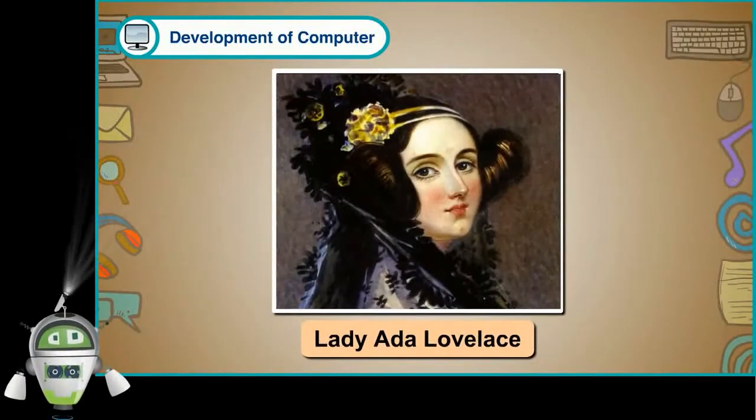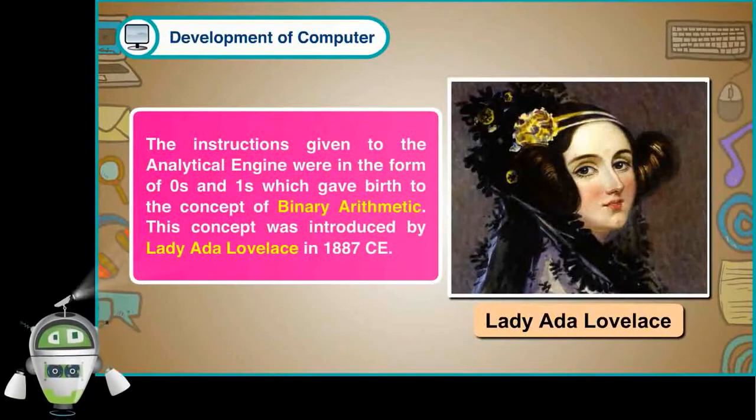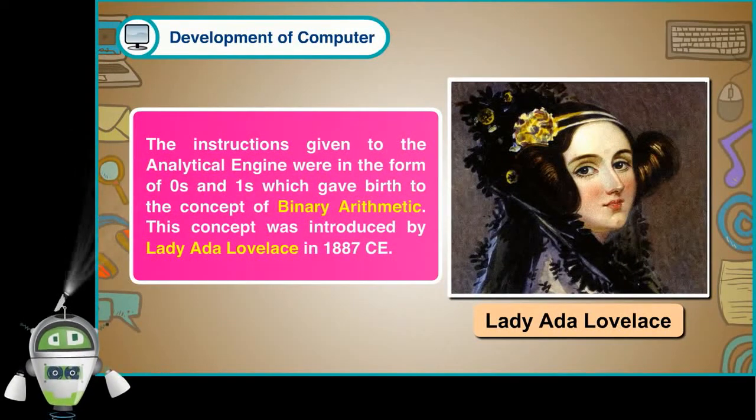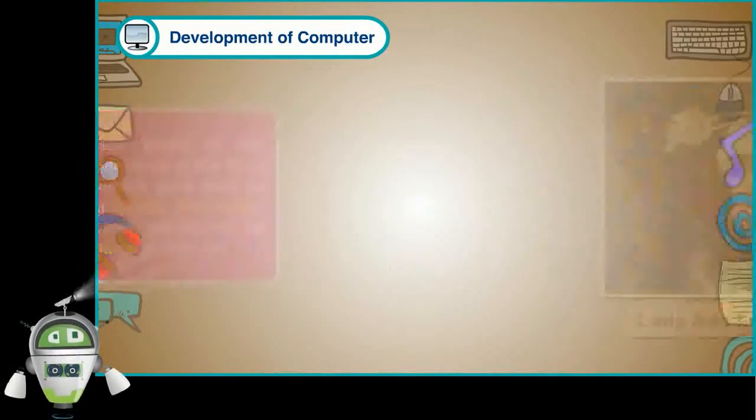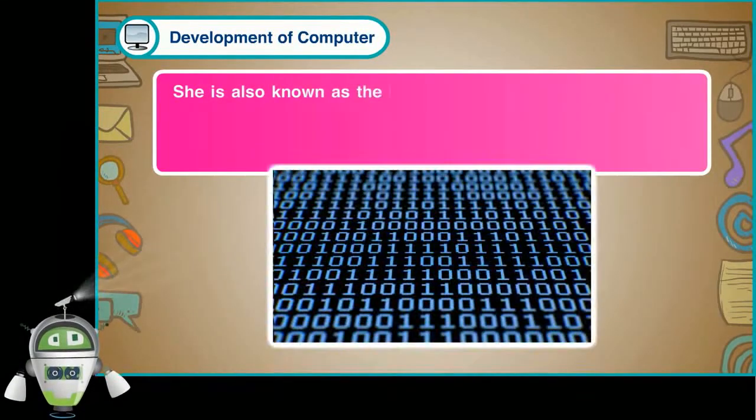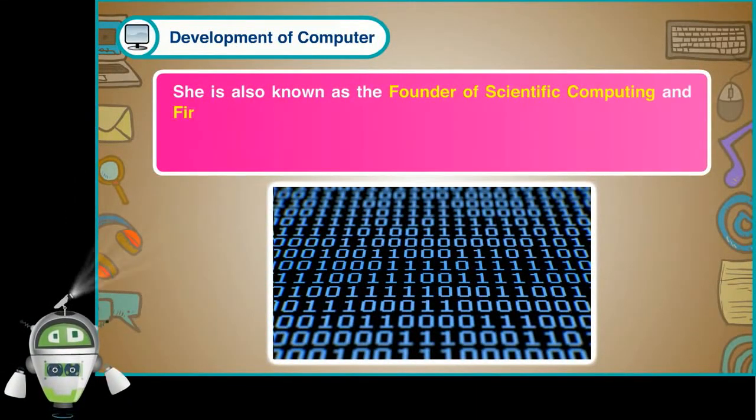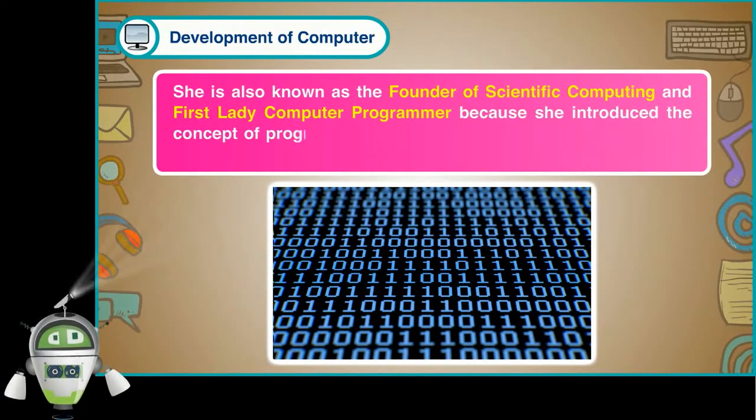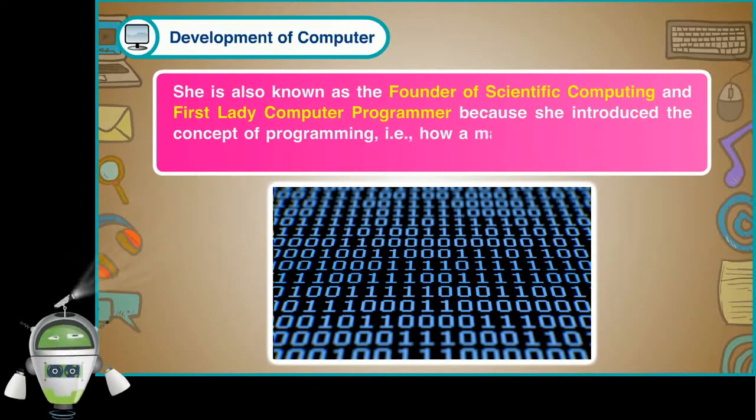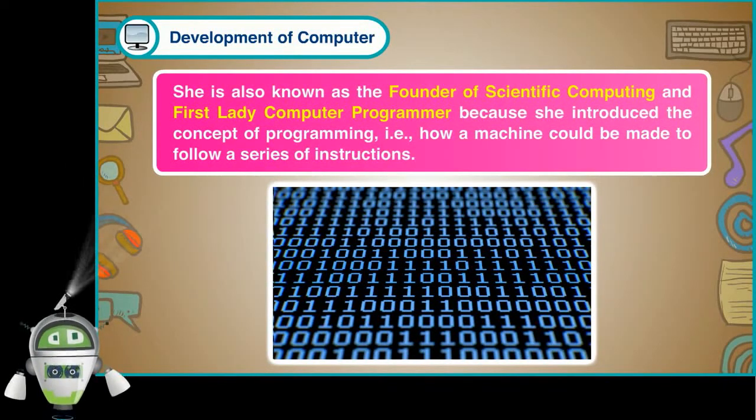Lady Ada Lovelace. The instructions given to the Analytical Engine were in the forms of zeros and ones, which gave birth to the concept of binary arithmetic. This concept was introduced by Lady Ada Lovelace in 1887 CE. She is also known as the founder of scientific computing and First Lady Computer Programmer, because she introduced the concept of programming, that is, how a machine could be made to follow a series of instructions.